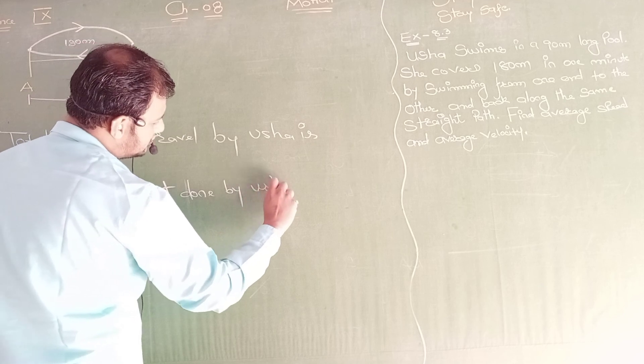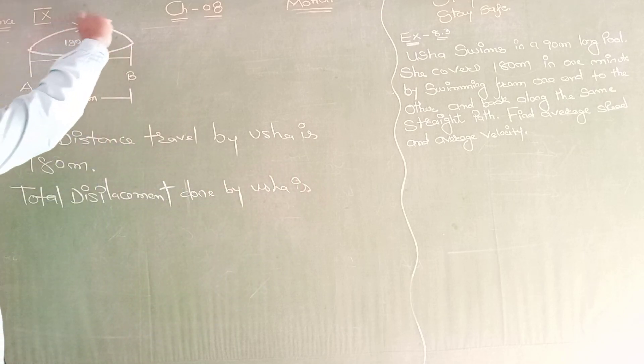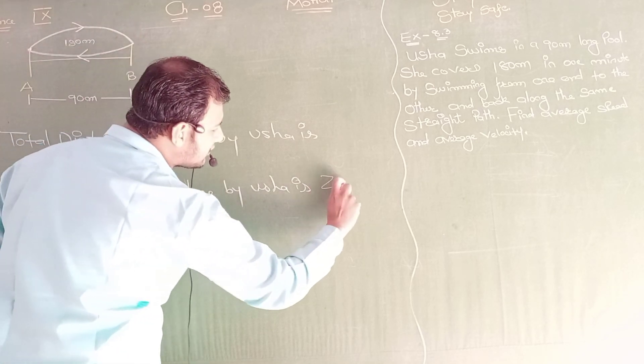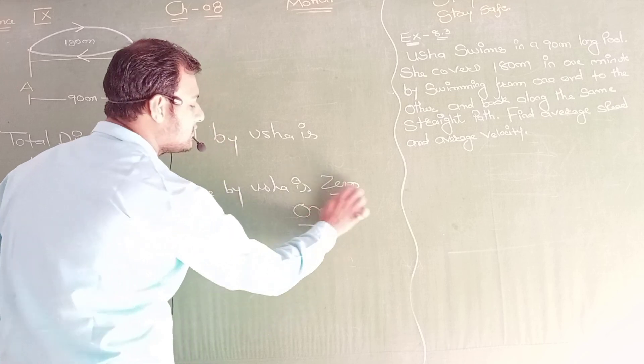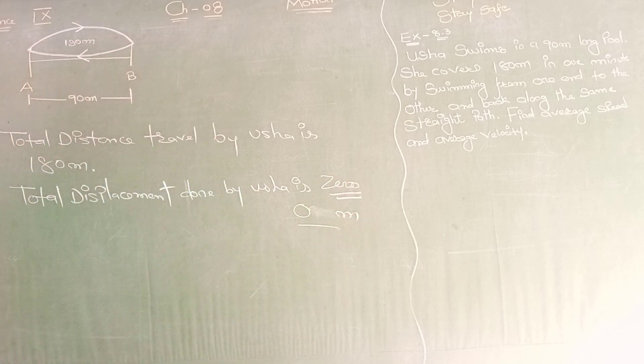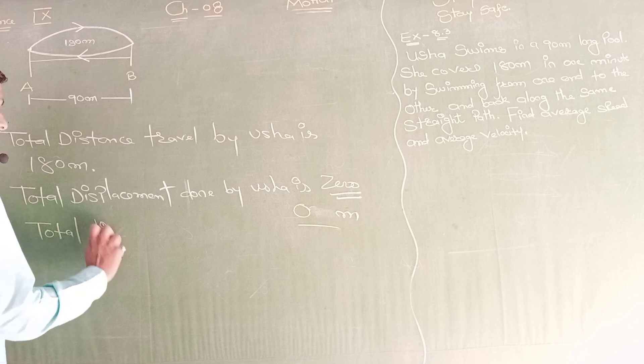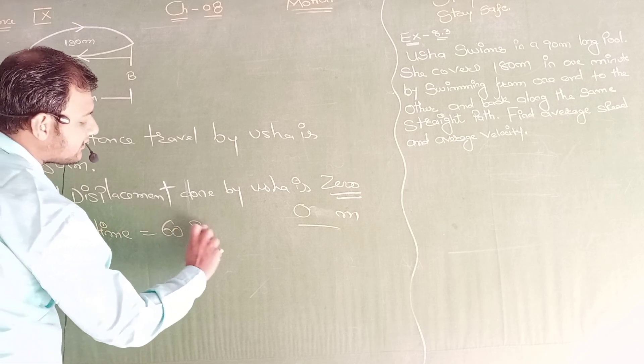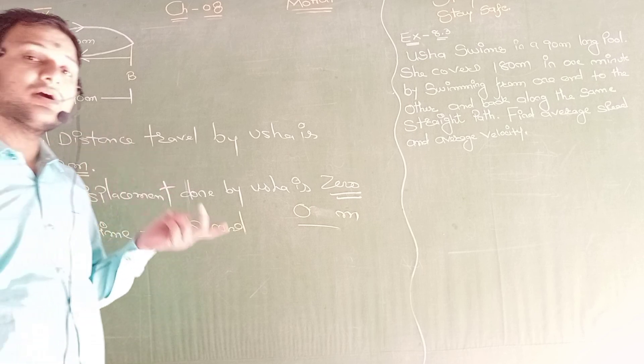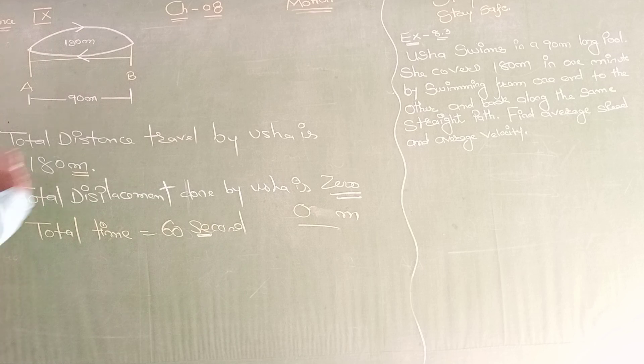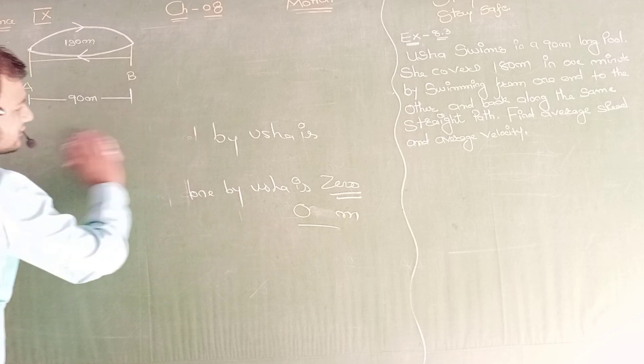Let us draw a diagram. This is the swimming pool. This point is A, this point is B. The distance between these two points is 90 meters. Usha starts from here, reaches B, then comes back to A. First she went there, then came back. How much time did Usha take? Total 180 meters. Total displacement done by Usha is - she started from here and came back to the same place - which means zero displacement, zero meters. Total time is one minute, which means 60 seconds.